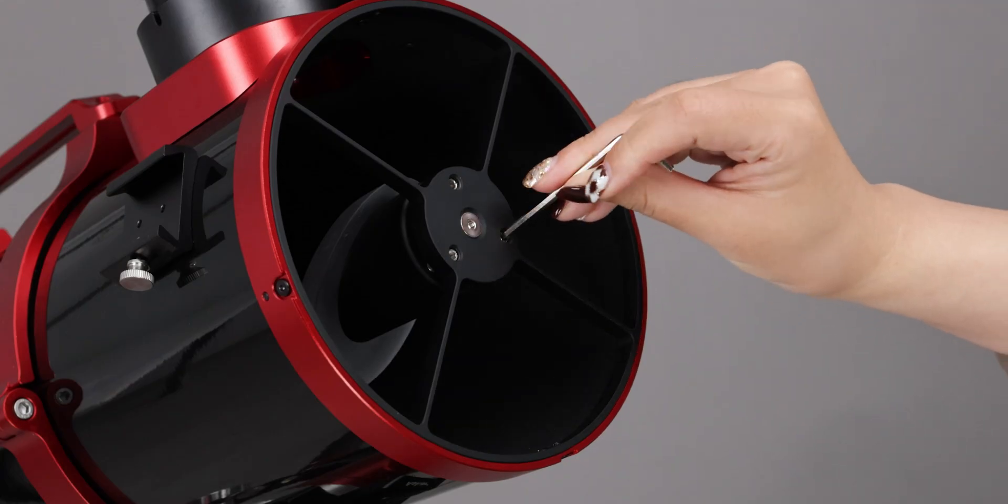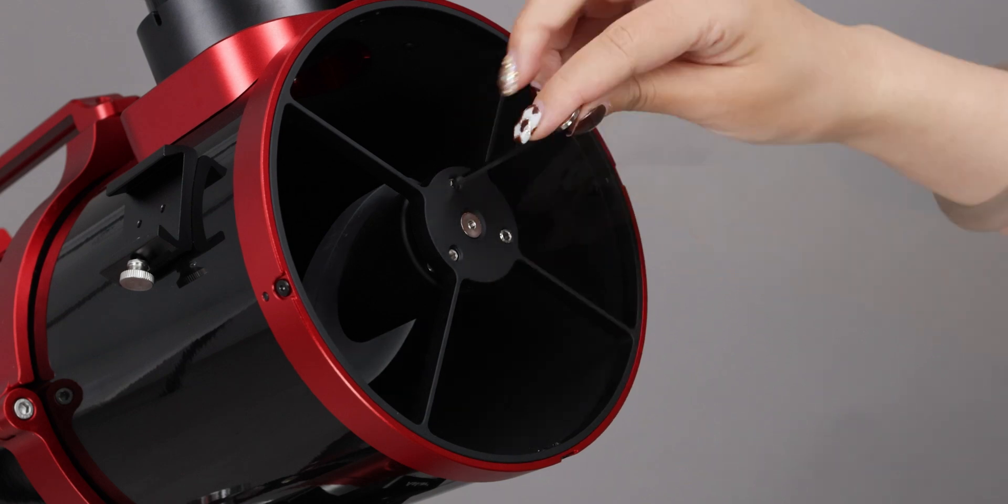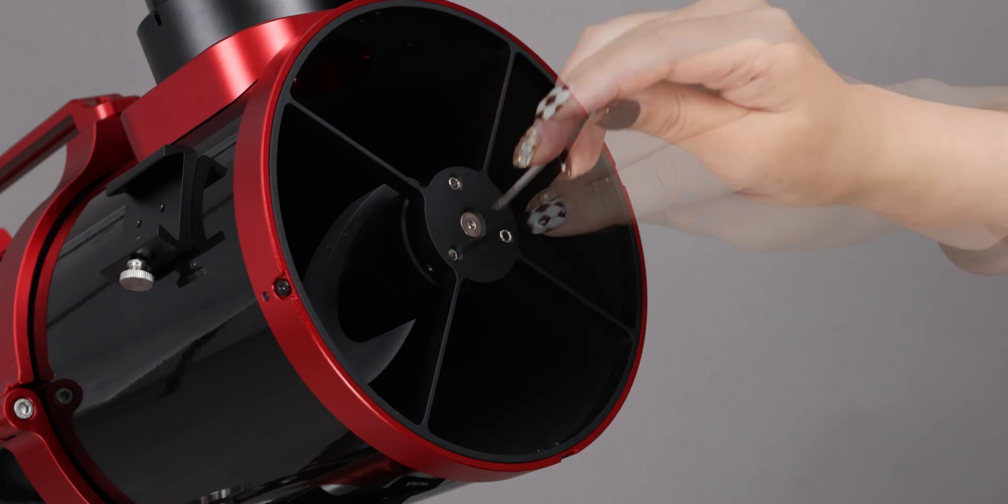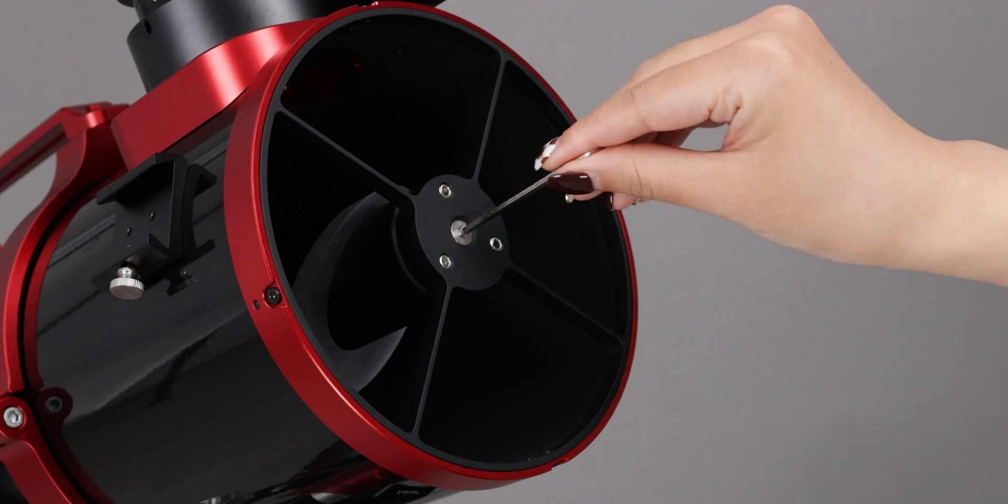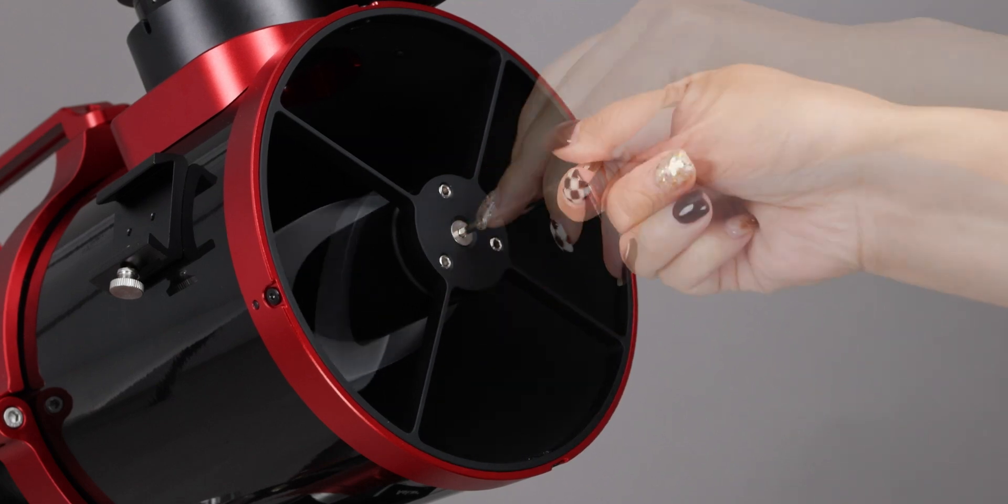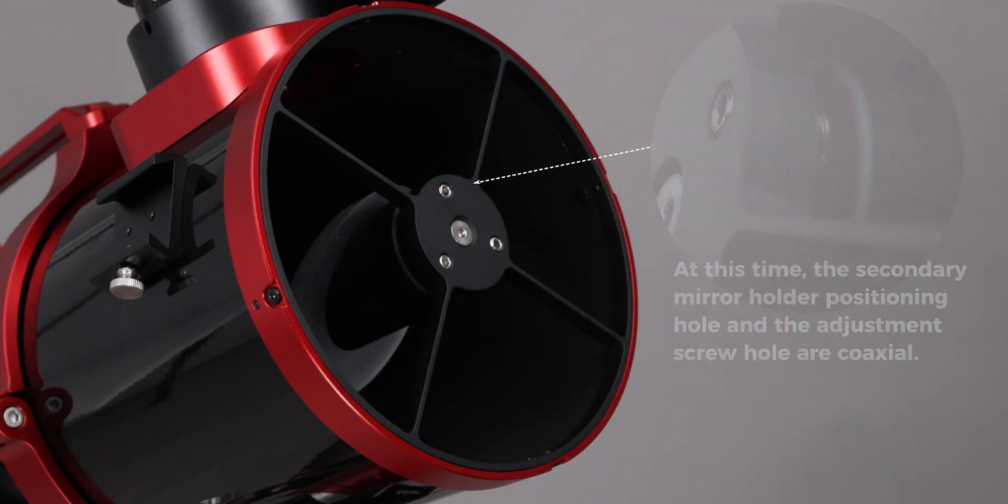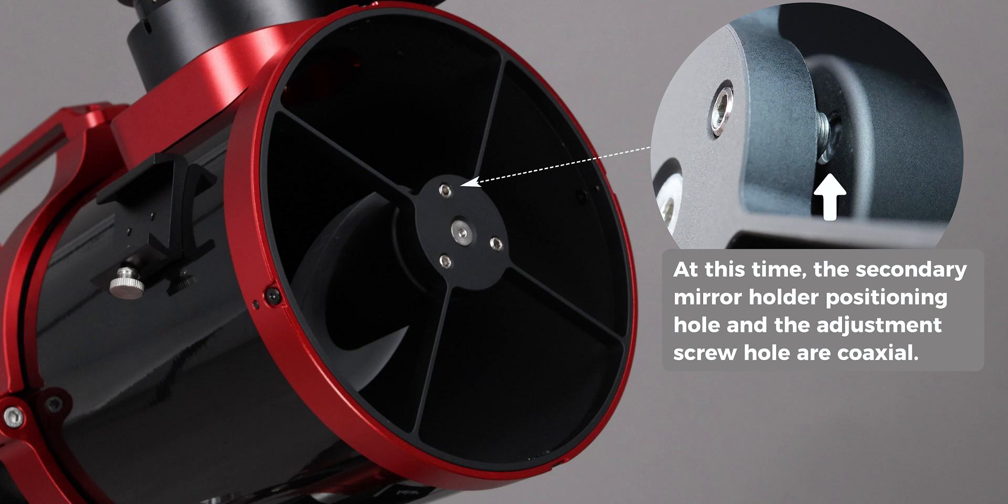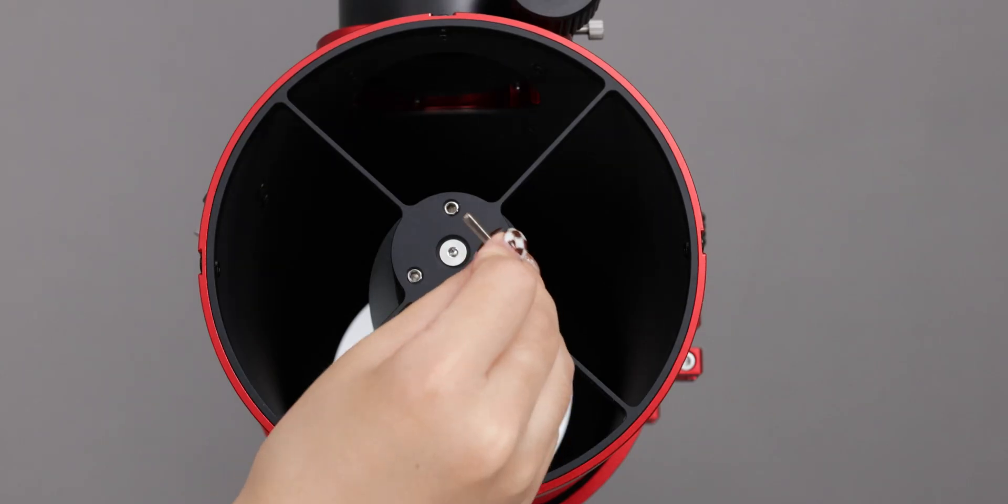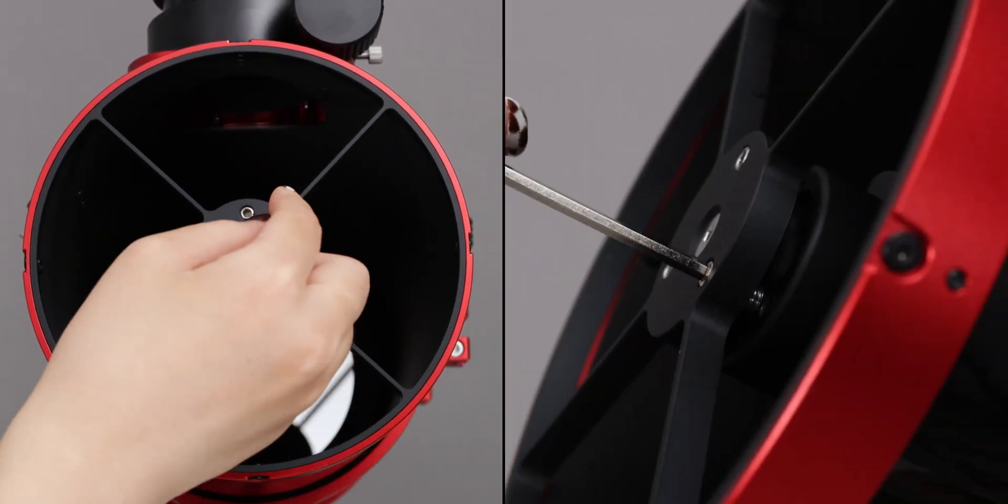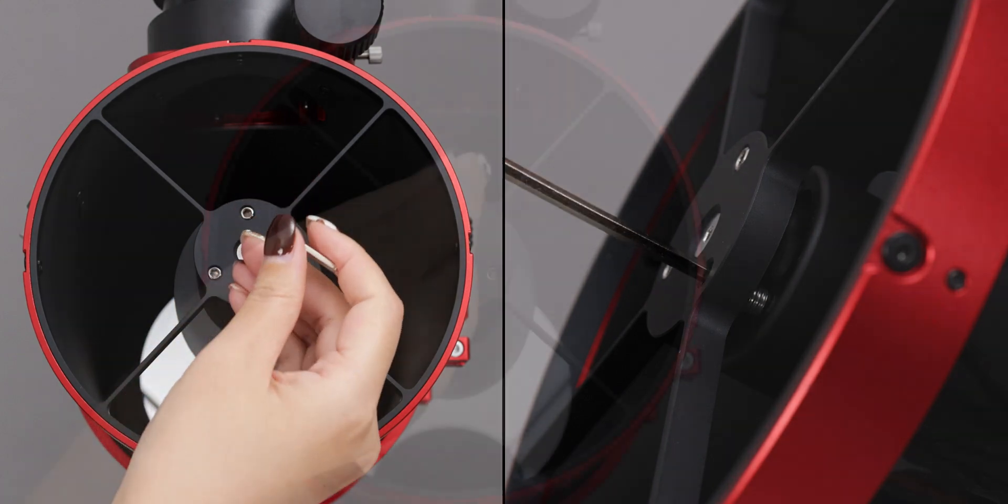Loosen all 3 secondary mirror adjustment screws. Tighten the secondary mirror locking screw until the secondary mirror holder can be turned with force. Turn the 3 secondary mirror adjustment screws so that they all can touch the base of the secondary mirror holder.